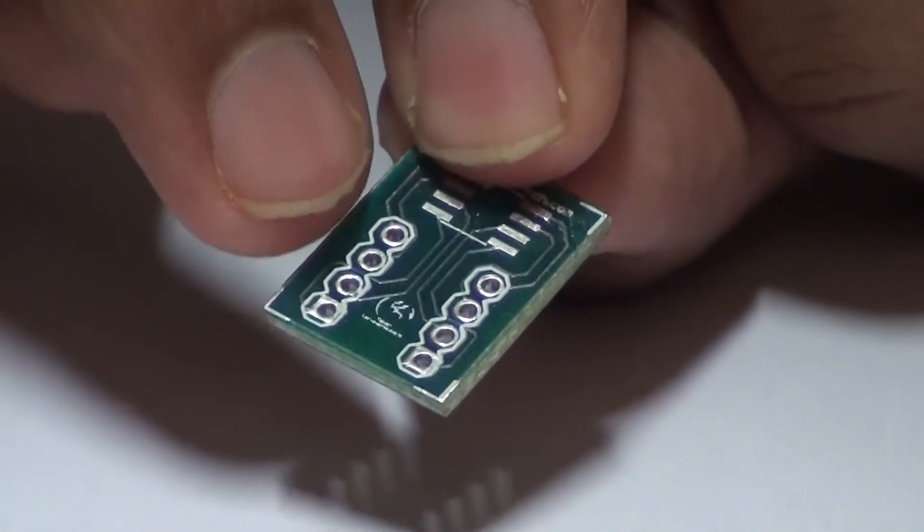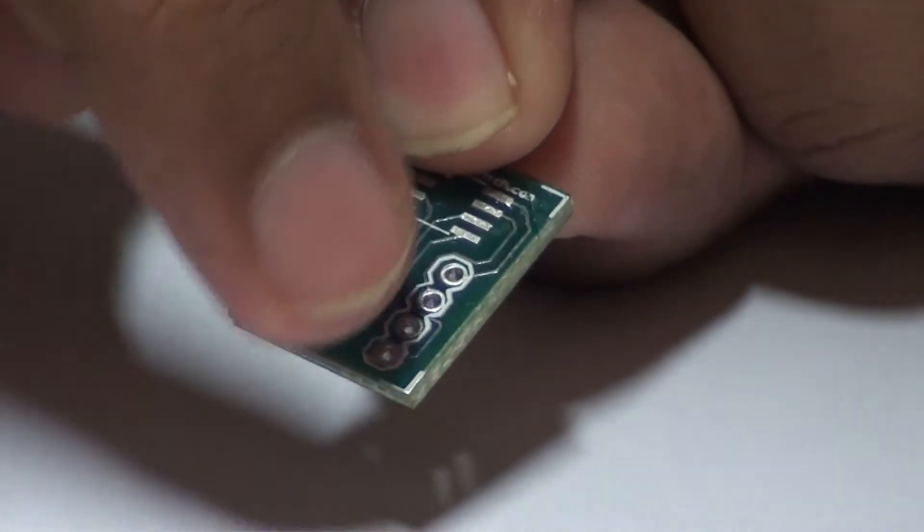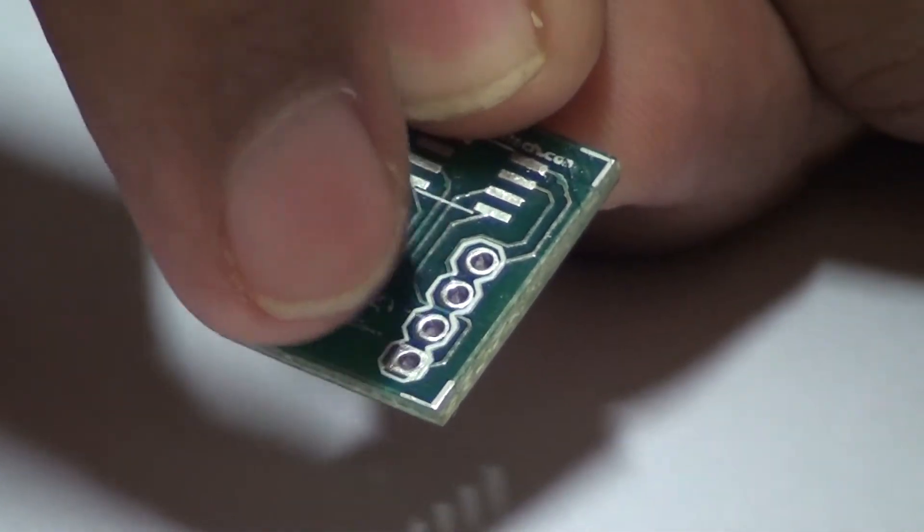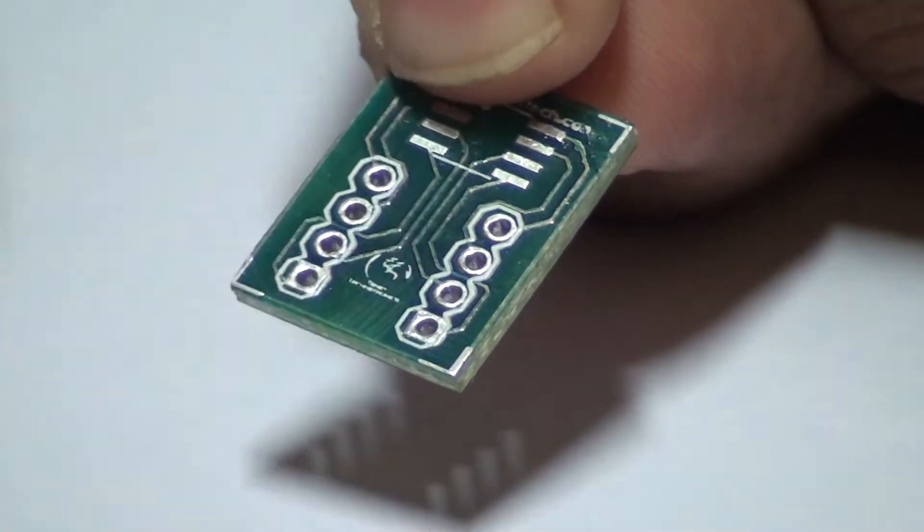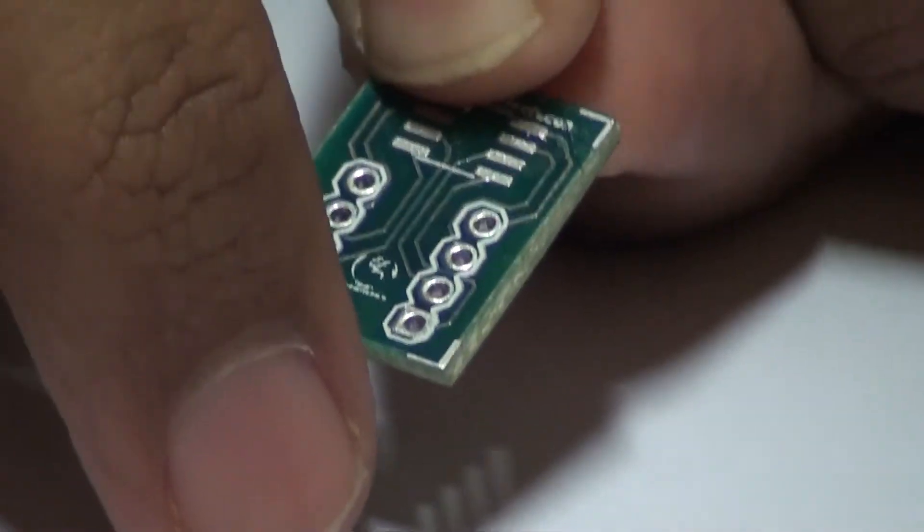It is an 8 pin SOIC to DIP blank breakout board. Two rows of pads are provided on 0.1 inch centers, that is they are 0.1 inches apart, to accommodate a standard 0.025 inch square pins.